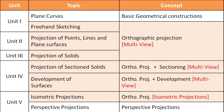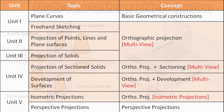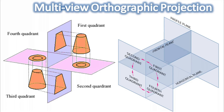As per Anna University syllabus, all five units are framed based on orthographic projection except a half in the first and last unit. In other words, 80% of the portion, or four units, have dealt with orthographic projection. Among these units, one type — isometric projection — covers a half unit, and the remaining three and a half units cover multi-view orthographic projection. In multi-view orthographic projection, different views of a 3D object are projected onto a planar surface.